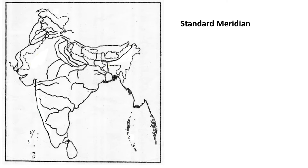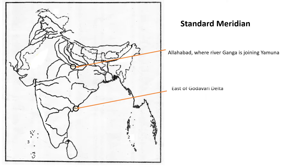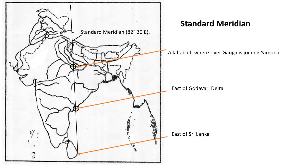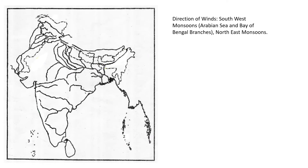First let's see how you can find out the standard meridian. This is Allahabad, where Ganga and Yamuna are joining. Then the next point you take is east of Godavari delta. And the third point you can take is east of Sri Lanka. When you draw a straight line, it is your standard meridian. Please write 82.5 degrees east — don't forget 'east'.